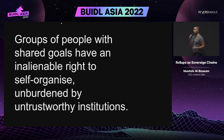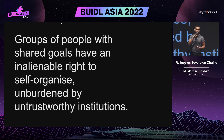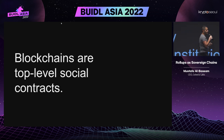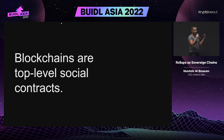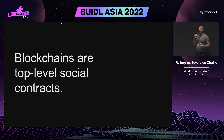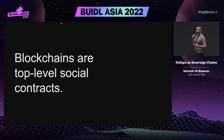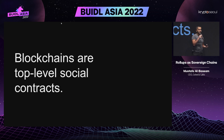One of our core beliefs for why we're building sovereign rollups is that groups of people with shared goals have an inalienable right to self-organize without being burdened by the status quo or untrustworthy institutions. Blockchains fundamentally enable that because at its core, a blockchain enables what I describe as a top-level social contract — for the first time in history, you can use a cryptographic network to reach agreement between a large group of people and enforce rules and contracts without having to go through a middleman or trusted third party like an institution, judge, or court.